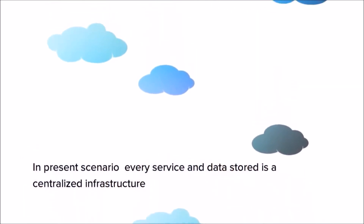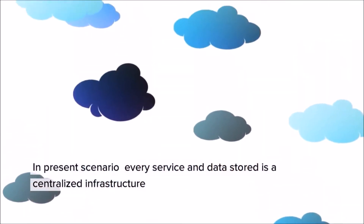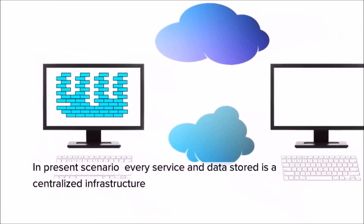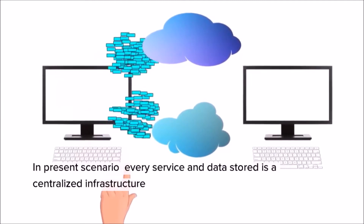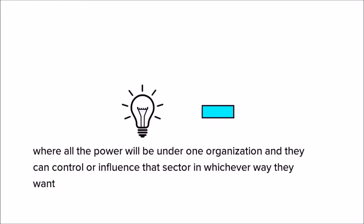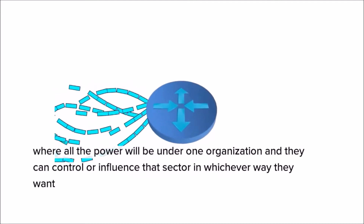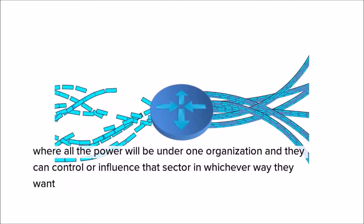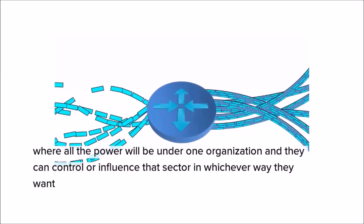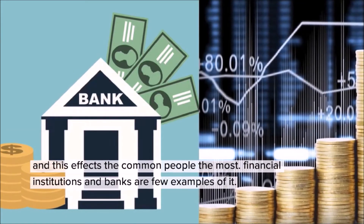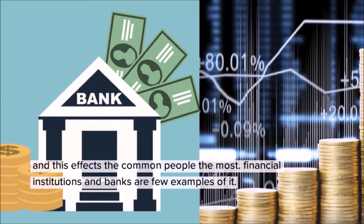In the present scenario, every service and data stored is in a centralized infrastructure, where all the power is under one organization and they can control or influence that sector in whichever way they want. And this affects the common people the most. Financial institutions and banks are a few examples of it.